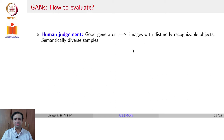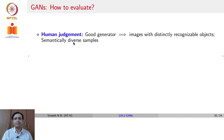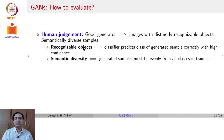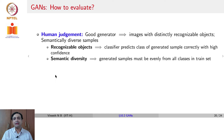For the final discussion: how do you evaluate GANs? For supervised learning we could use accuracy, but GANs require different evaluation. One approach is human judgment — a good generator should produce images with distinctly recognizable objects and semantically diverse samples. Recognizable objects means an independent classifier can predict the class with high confidence. Semantic diversity means the GAN generates samples from various different classes, ideally all classes in the training set.